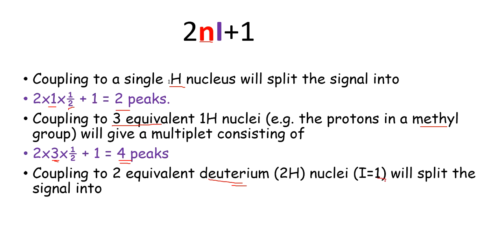For deuterium, the I value is 1. There are 2 equivalents of deuterium, so N equals 2 and I equals 1. Applying 2NI+1 gives 2 × 2 × 1 + 1, which equals 5 peaks.